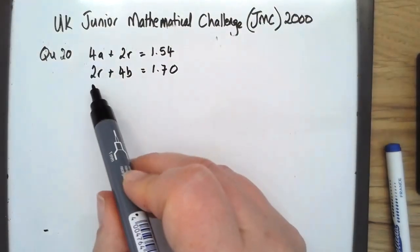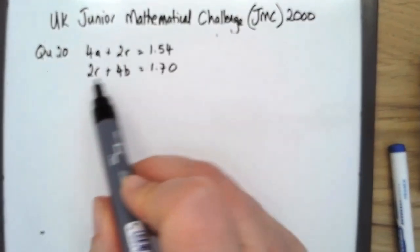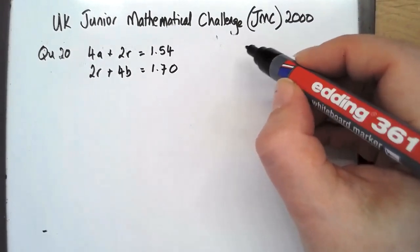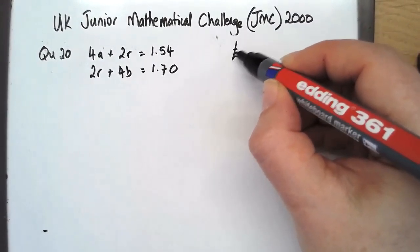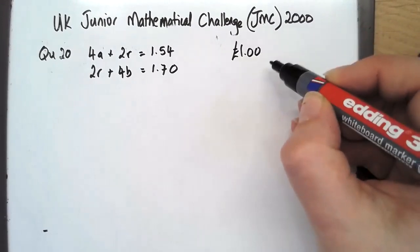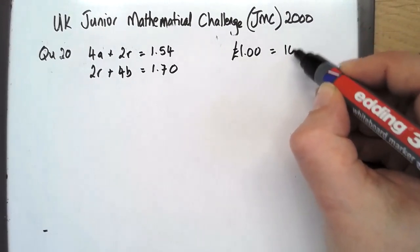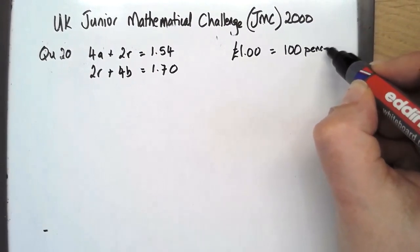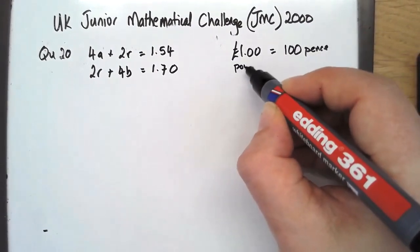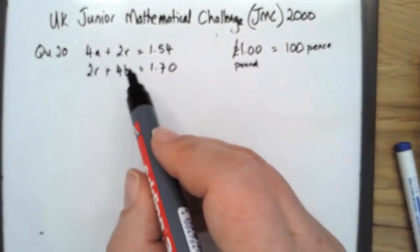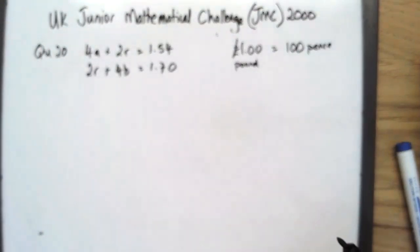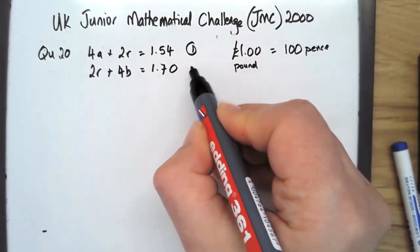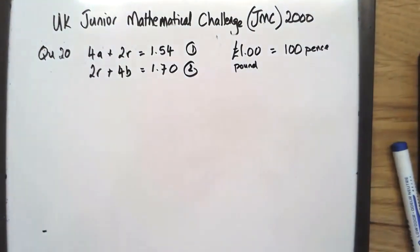So I've put it in form of an equation here. One thing you do need to know if you're not used to British currency is £1 is the same as 100 pence. So I've got two equations just here, one and two.